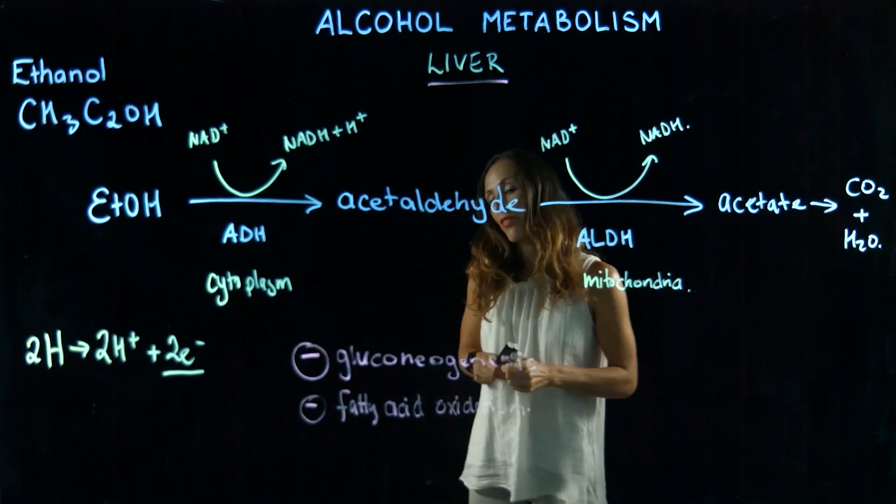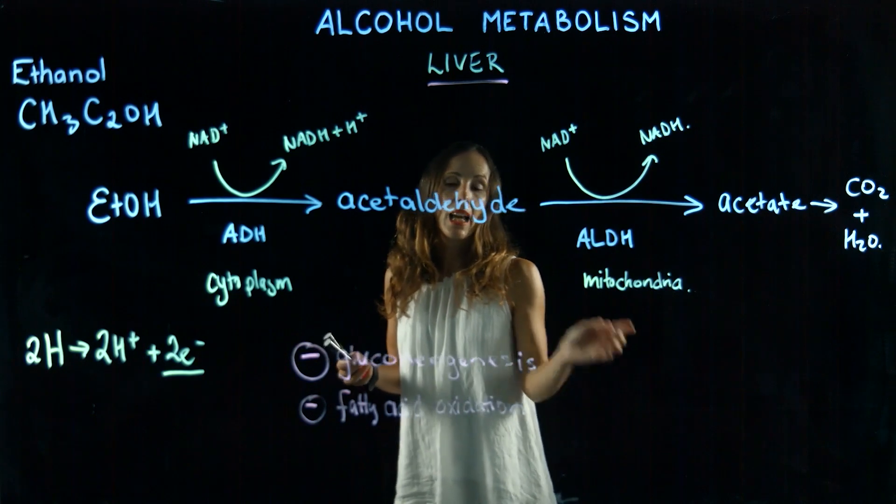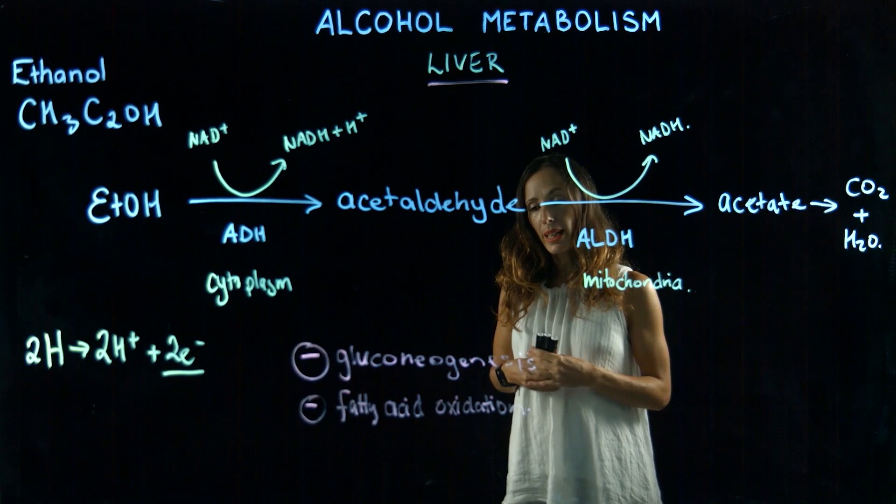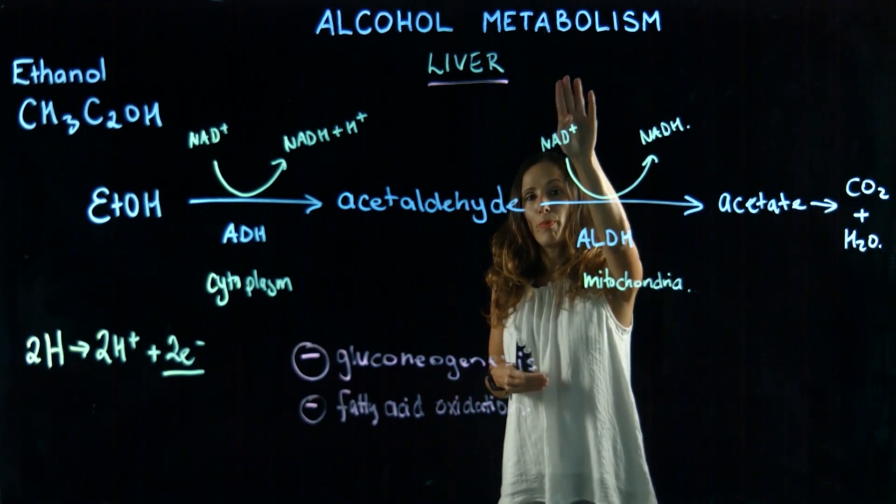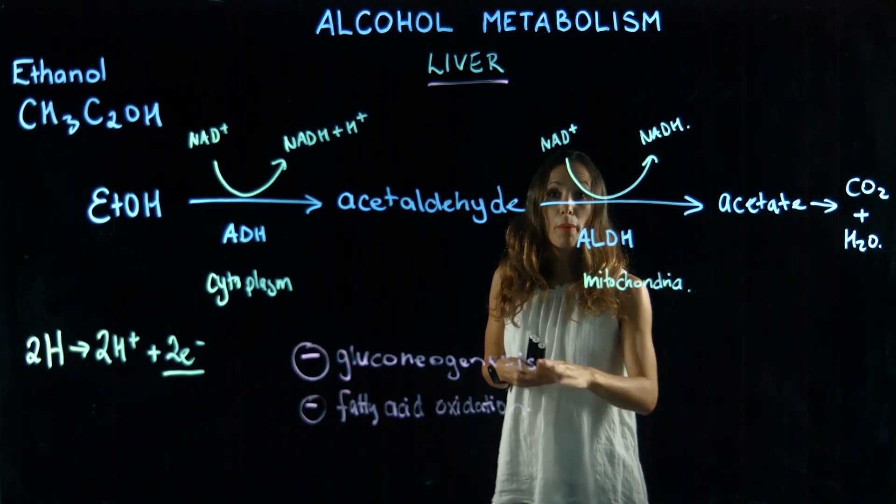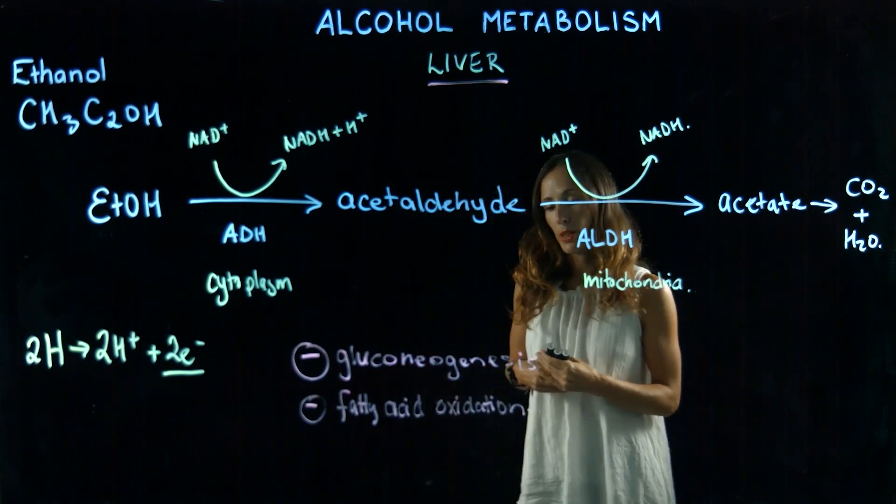If you think of gluconeogenesis, this is where we take our lactate and use it to generate glucose. If someone is going for a run or doing some exercise and they drink beer at the end, they run the risk of being hypoglycemic because they're inhibiting the production of glucose.